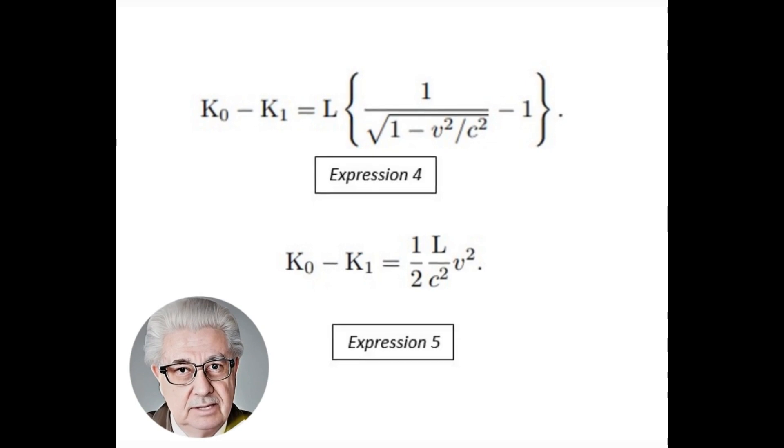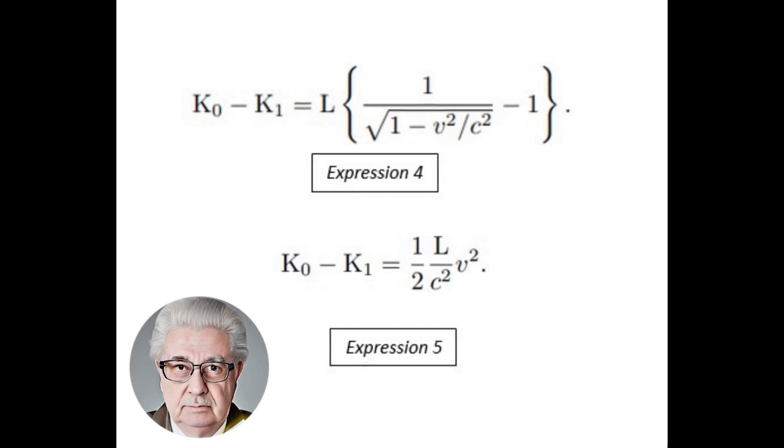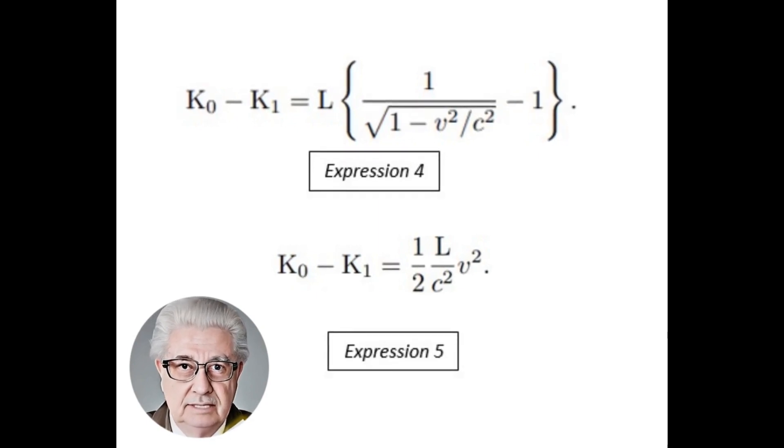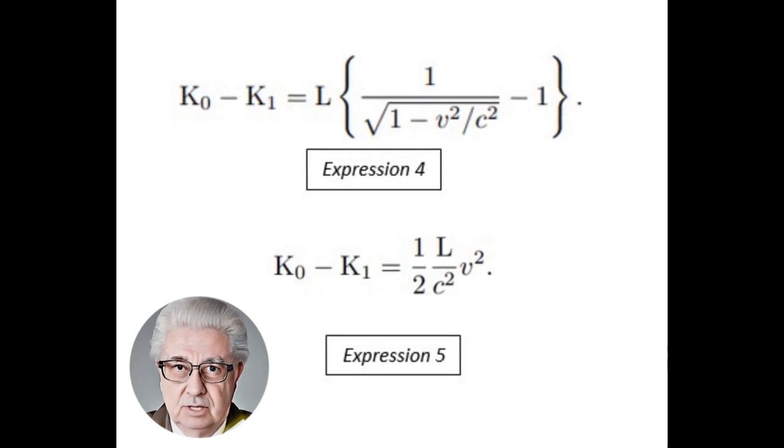This means that it is considering only the magnitude of greater weight and discarding the negligible magnitudes. The simplification resulting from this approximation is that the difference of kinetic energy K0 minus K1 can be approximated to expression 5.